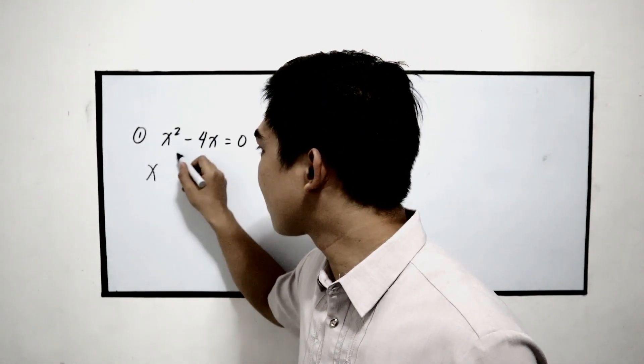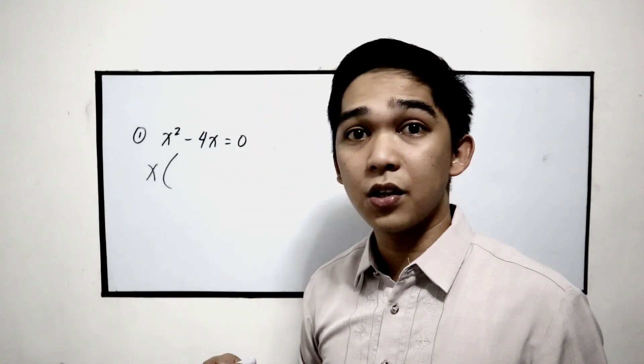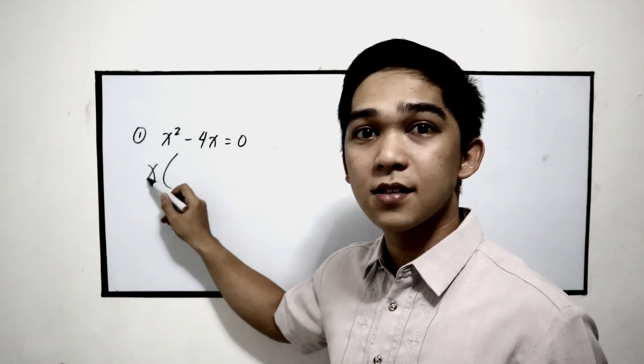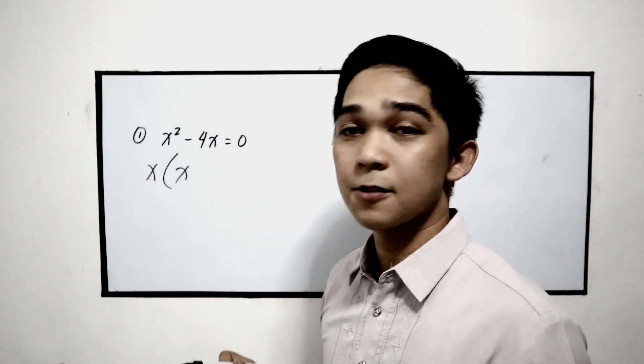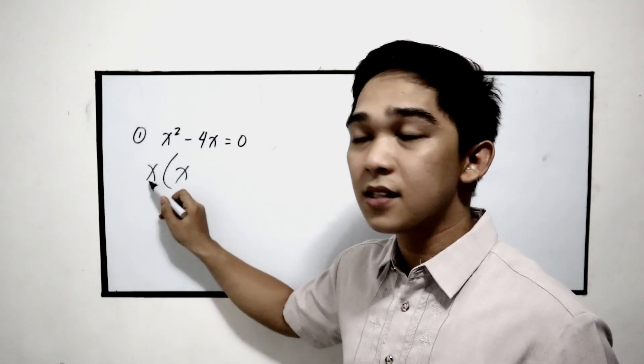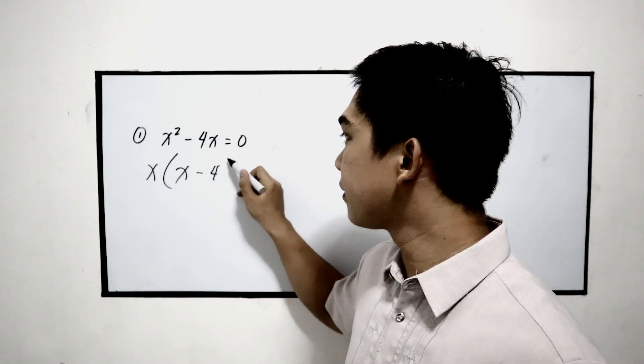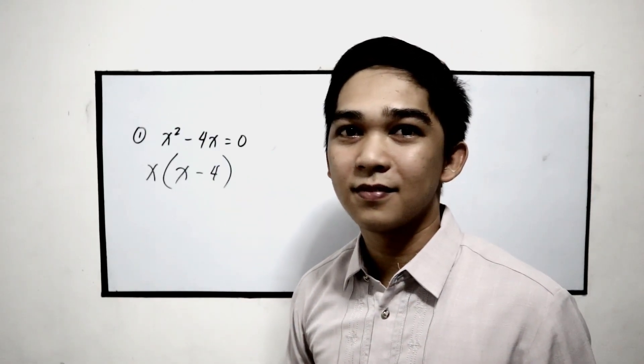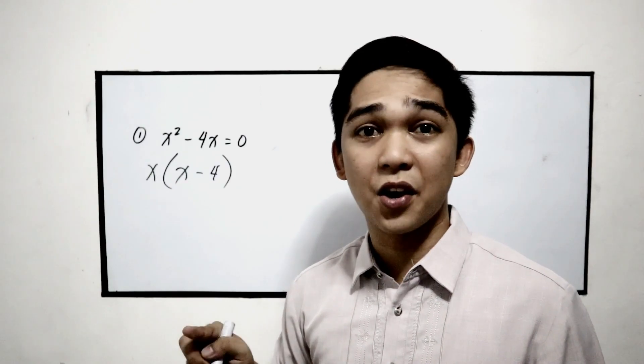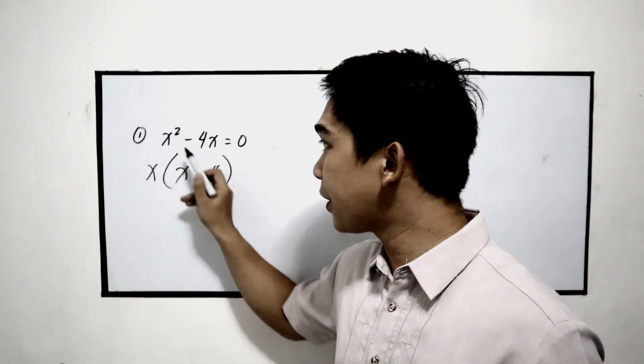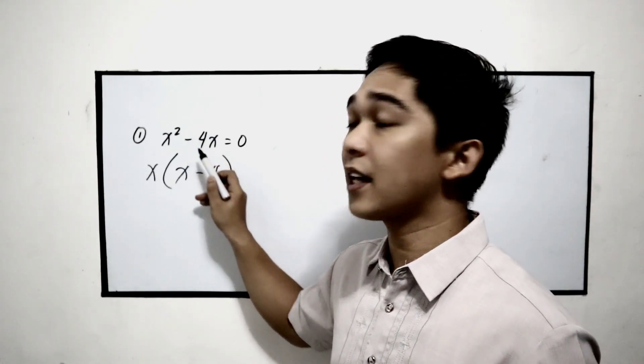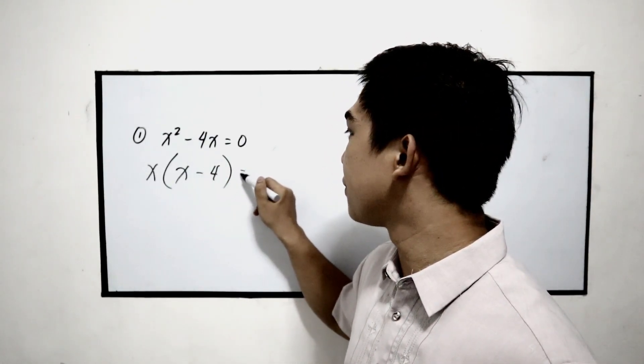That means x times the other factor. We need to divide. x squared divided by x, that is x. Negative 4x divided by x, that is negative 4, that is the other factor. You can also check whether your factors are correct. So x times x, x squared. x times negative 4, negative 4x equals 0.